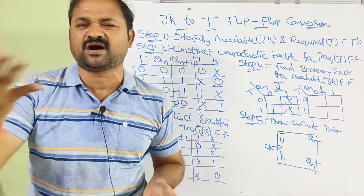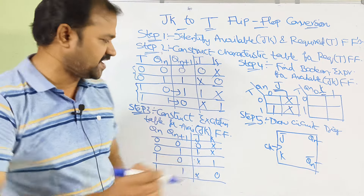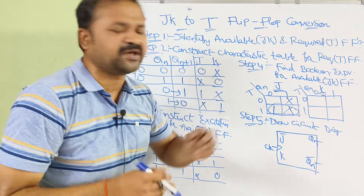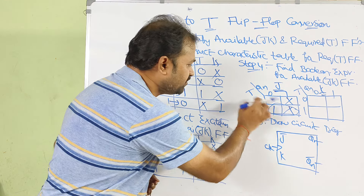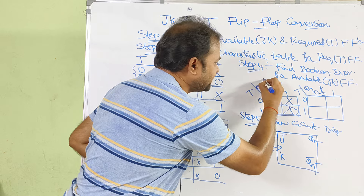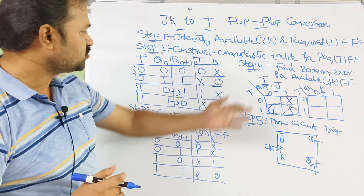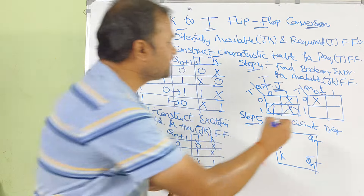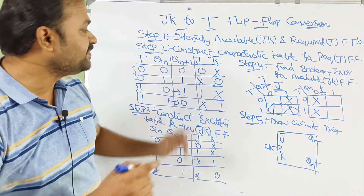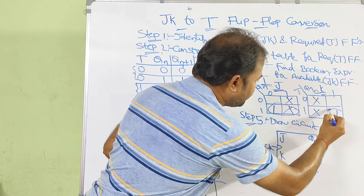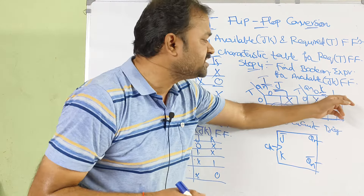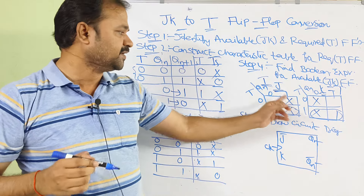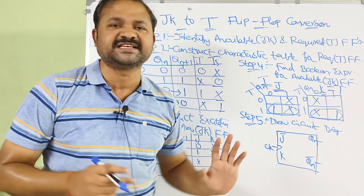We can cover don't care or not — there is no problem, but we must cover the 1. In order to cover this 1, combine these 2 cells as a group. Qn value is changing from 0 to 1, so there is no need to consider Qn. T value is 1, so the expression for J is T. Likewise, evaluating the expression for K: the 1 appears at T=1, Qn=1. Combining those 2 cells, Qn is changing so we ignore it, and T value is 1. So the expression for both J and K is T.